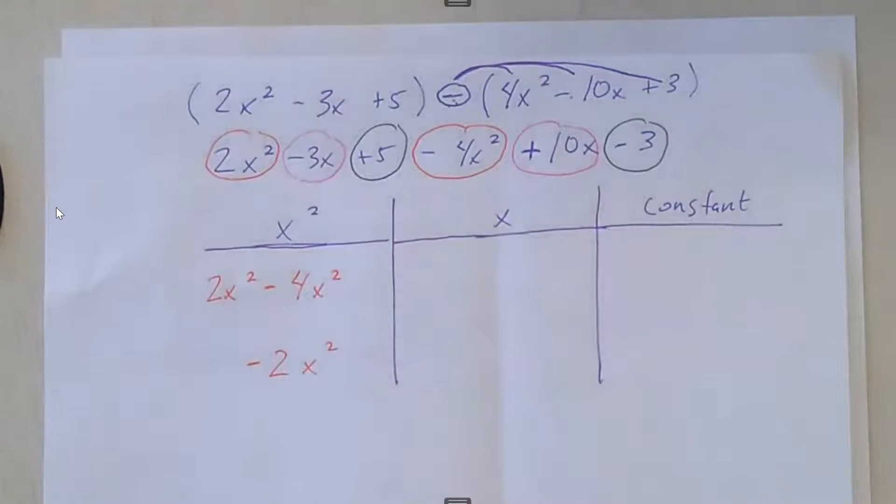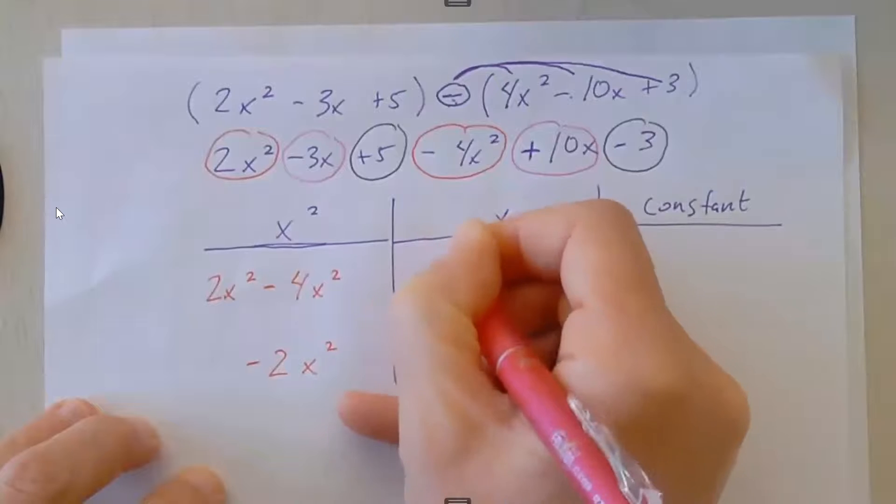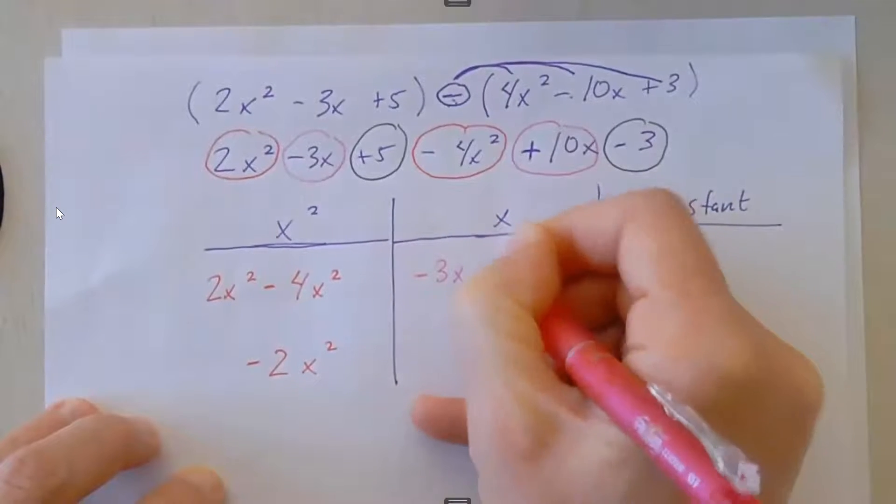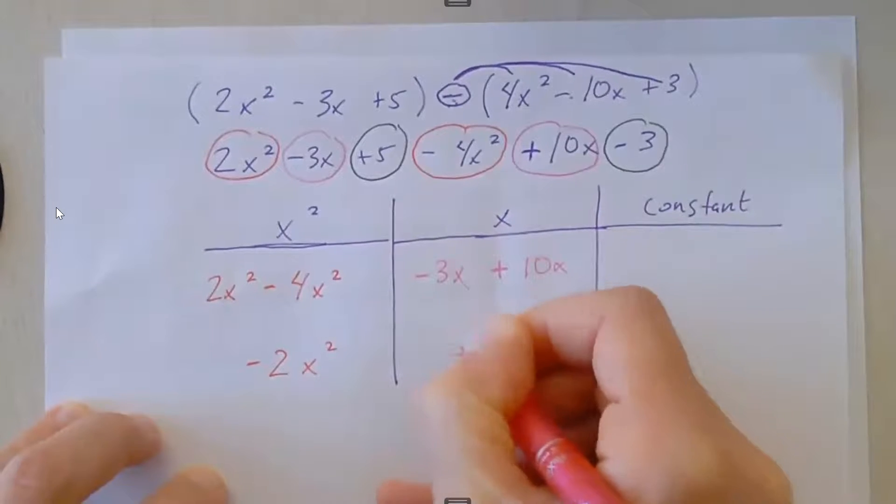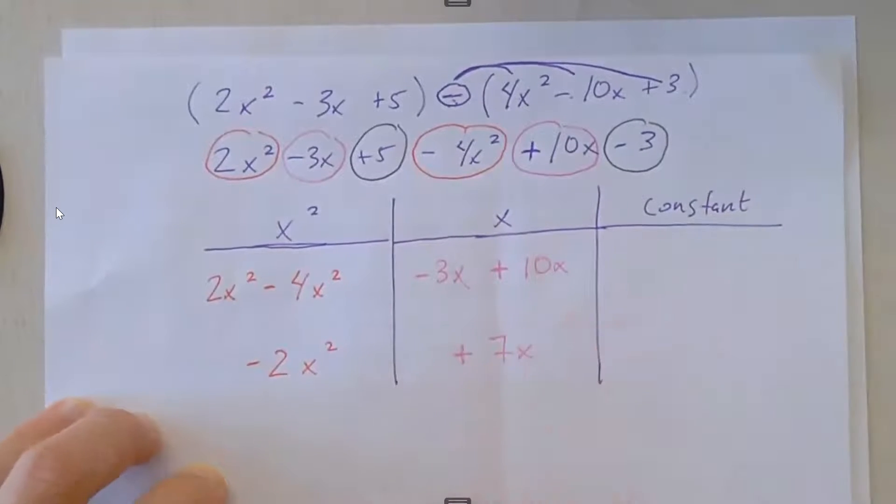So my x terms, highlighted in pink, are negative 3x plus 10x. Negative 3 plus 10 is positive 7, so that means this is positive 7x.